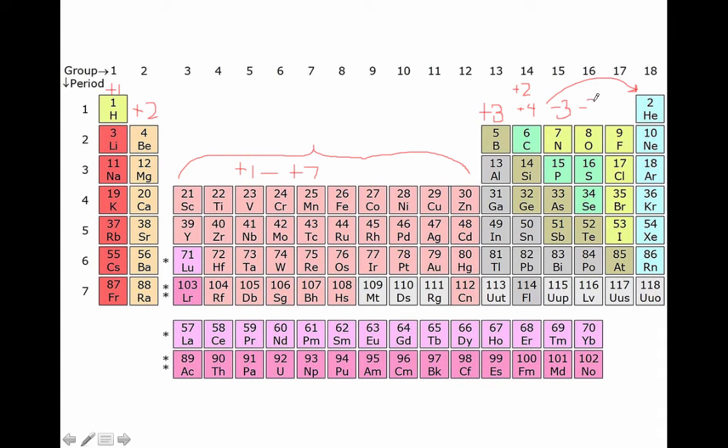Oxygen is two electrons shy of becoming like neon. All of these elements in this family are two electrons shy of becoming isoelectronic with the noble gases. So they form negative two ions.